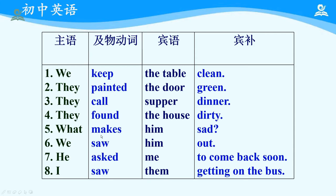What makes him sad? We saw him out. He asked me to come back soon. I saw them getting on the bus. 宾补是用来补充说明宾语的状态的，并不是谓语动词的施加对象。主谓双宾结构是指一个谓语动词有两个承受对象，大部分情况下一个是人一个是物；而主谓宾宾补则是通过宾语的补足语来补充说明宾语的情况。这就是双宾结构和主谓宾宾补结构的区别。